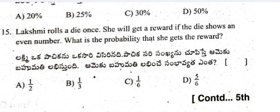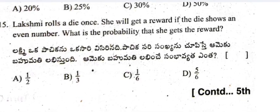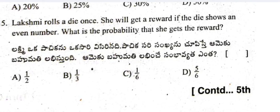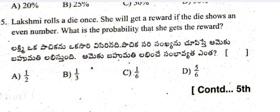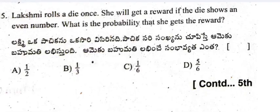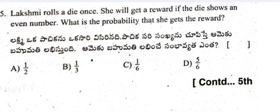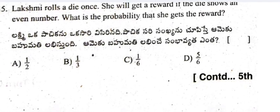Question 15: Lakshmi rolls a die once. She will get a reward if the die shows any one particular number. What is the probability that she gets the reward?